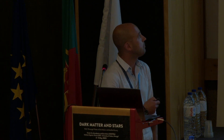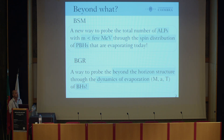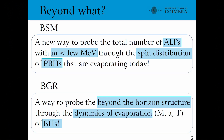Beyond which standard scenarios? Beyond the standard model of particle physics, in the sense that we would like to provide a new way to probe the total number of axion-like particles, or in general a light scalar, with a mass smaller than a few mega-electron volts, throughout the spin distribution of primordial black holes that are today evaporating. On another side, beyond the vacuum solution of general relativity — we want to provide a way to probe the beyond-the-horizon structure of solutions which are not vacuum solutions of GR, through the dynamics of black hole evaporation, tracking the mass, spin parameter, and temperature.